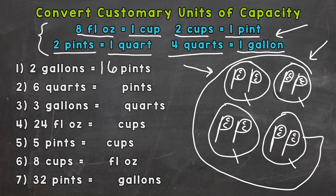Number two: six quarts equals how many pints. In each quart there are two pints, so we want six of those. Six times two gives us twelve pints.